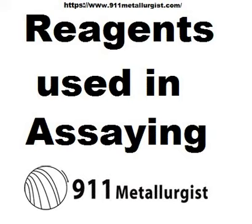Aqua regia is a mixture of one part by measure of nitric acid and three parts of hydrochloric acid. The acids react, forming what is practically a solution of chlorine. The mixture is best made when wanted, and is chiefly used for the solution of gold and platinum, and for opening up sulfides. When solutions in aqua regia are evaporated, chlorides are left.